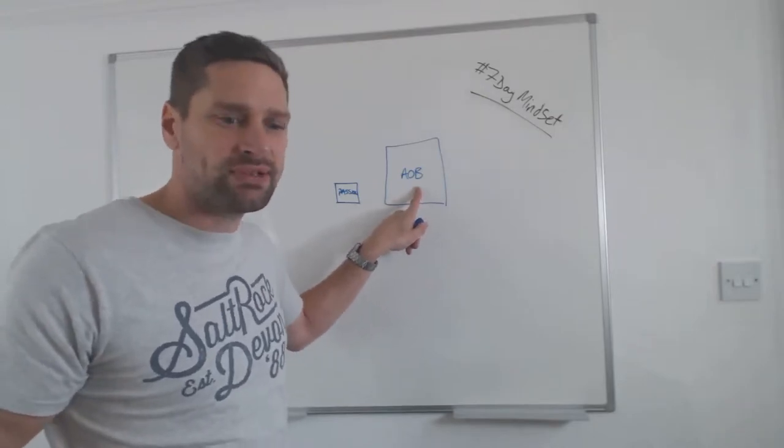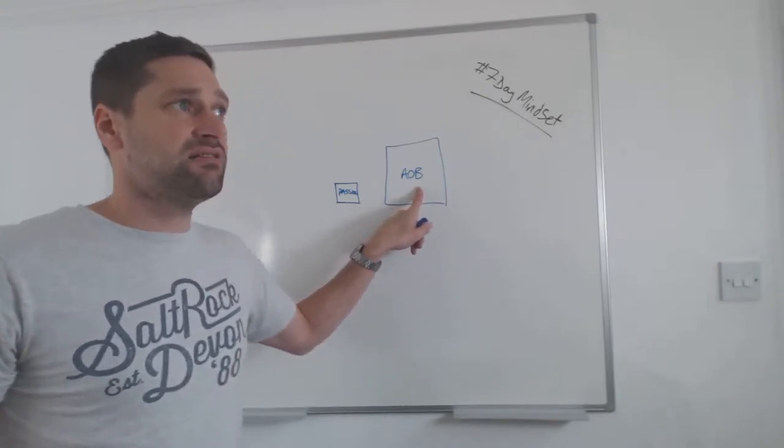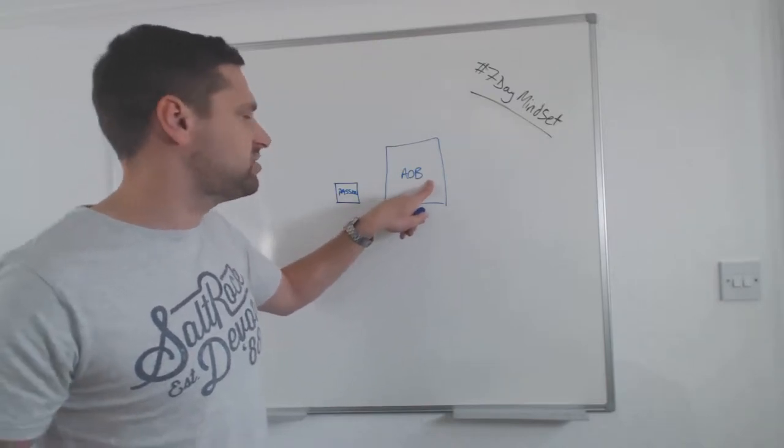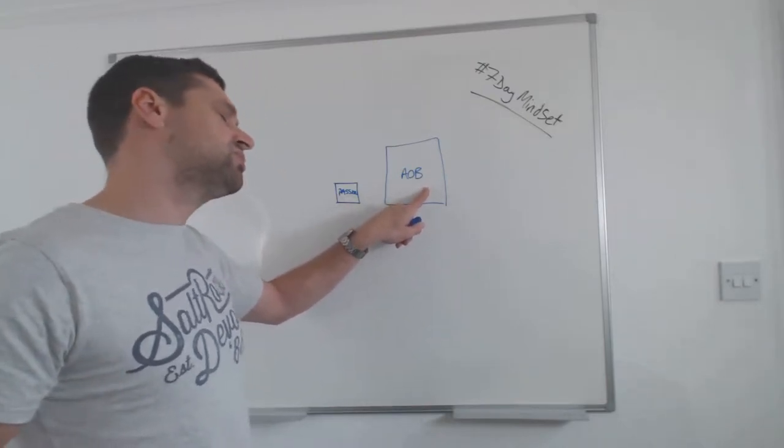But what their AOB box looks like—imagine these boxes are a picture of time—I see pretty much every business owner spending loads of time in their AOB box doing bookkeeping, accounting, marketing, networking events, driving between events, training, socializing, having lunches, writing proposals.